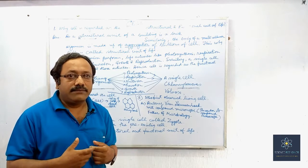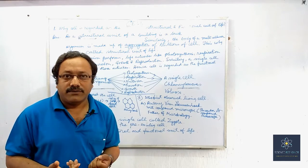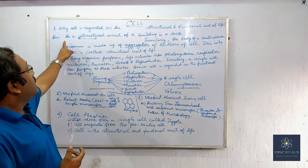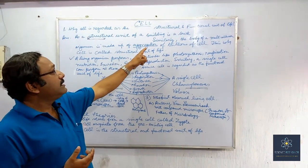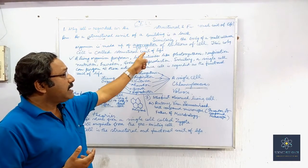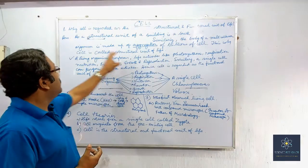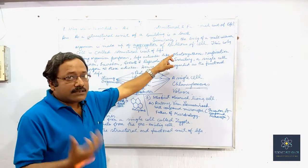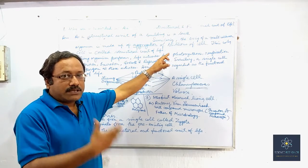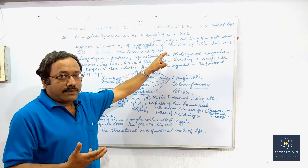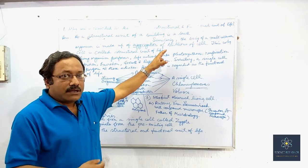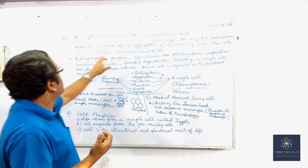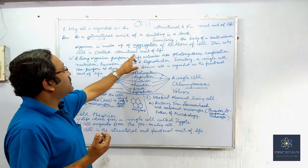As written on the board: as the structural unit of a building is a brick, similarly the body of a multicellular organism is made up of an aggregation of trillions of cells. As you know, our body is made up of trillions of cells, so the structural unit of the entire body is the cell. This is why the cell is called the structural unit of life.